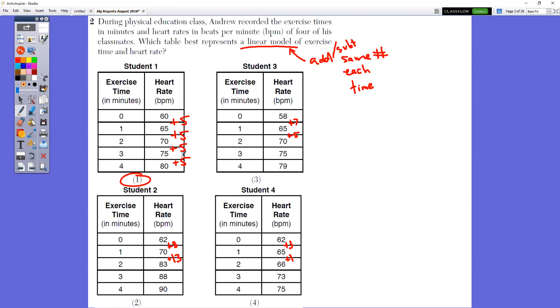So you can see in this one, you're adding by five each time, where in this one, you're adding by different numbers in two, three, and four. So because you're adding by the same number each time, that's going to be linear. So it's choice number one.